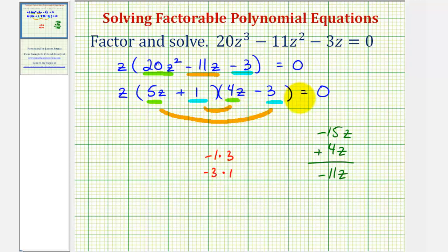And now that we have this factored, we can solve. Notice in this case, we actually have three factors. We have a factor of z, we have a factor of 5z plus 1, and we have a factor of 4z minus 3, which means any of these factors can equal zero, and this product would be zero. So we're going to have three solutions.